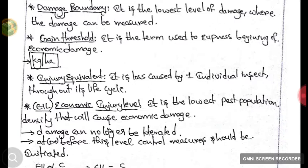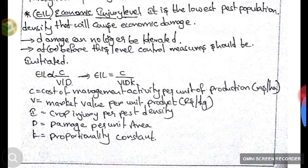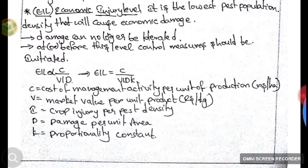The next concept is EIL — Economic Injury Level. EIL is the lowest level of pest population density that will cause economic damage. For example, for a plant there may be 20 thrips. If there are only 5 thrips, it does not cause much damage, but if it reaches 20 thrips per plant, it will cause economic damage. This number of 20 thrips can be termed as the EIL. At or before the EIL, we should initiate control measures, as the damage can no longer be tolerated.